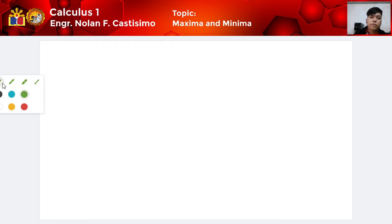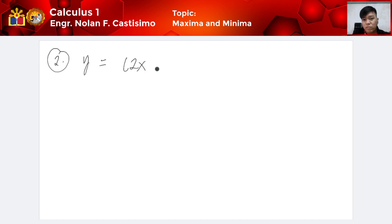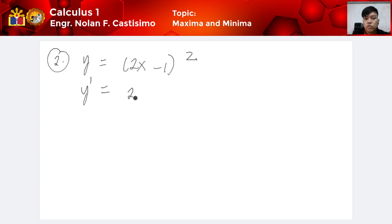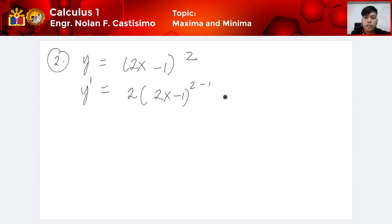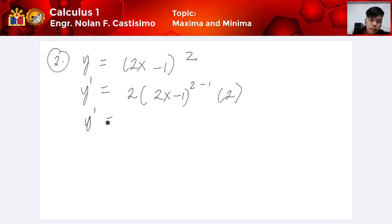Let's have another example, number 2. Say we have y is equivalent to (2x minus 1) squared. First step, we find its first derivative using chain rule: y prime is equivalent to 2 times (2x minus 1) raised to 2 minus 1, times the derivative inside which is 2. So y prime is equivalent to 4(2x minus 1).